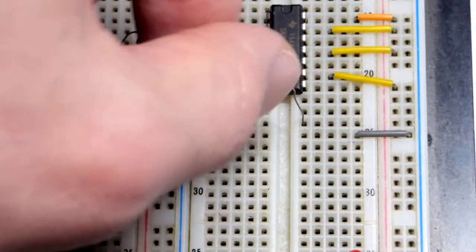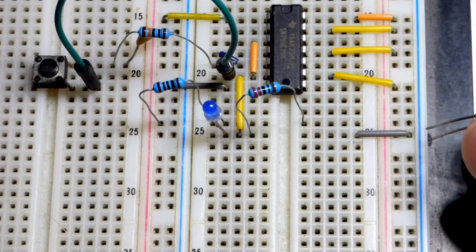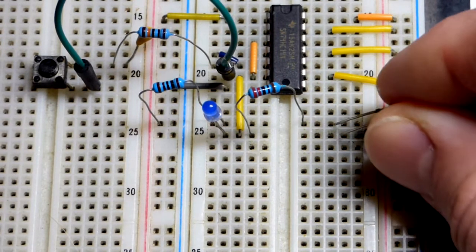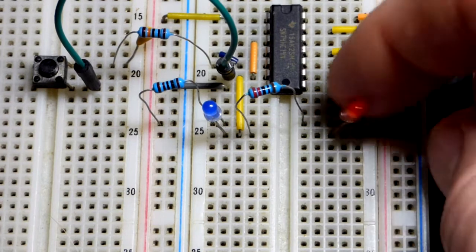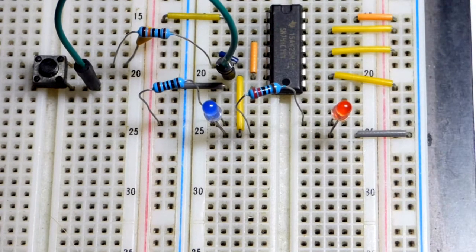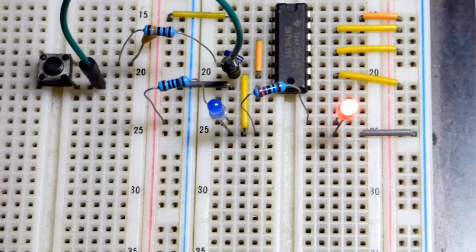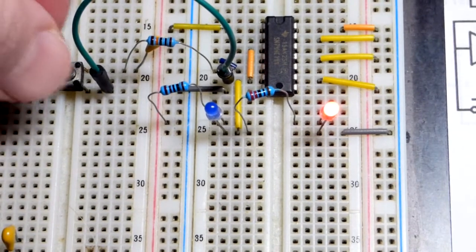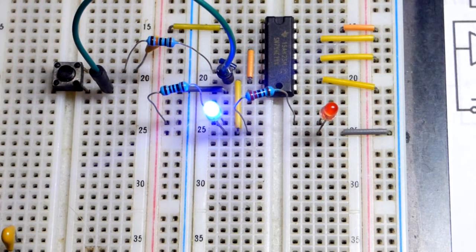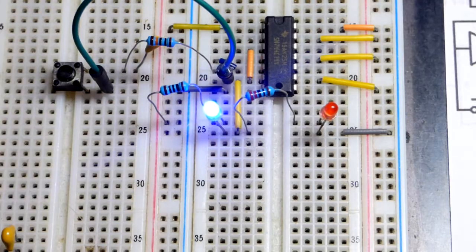The short lead, the cathode, goes that way, and the long lead, the anode, goes up there. It will light up when the output is higher. The power is on now - I just turned it on. We'll test this out. Press the button, and there you can see we latched it into place.